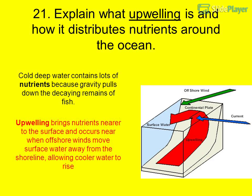Question 21: Explain what upwelling is and how it distributes nutrients around the ocean. Cold deep water contains lots of nutrients because gravity pulls down the decaying remains of fish. Upwelling brings nutrients nearer to the surface and occurs when offshore winds move surface water away from the shoreline, allowing cooler water to rise.